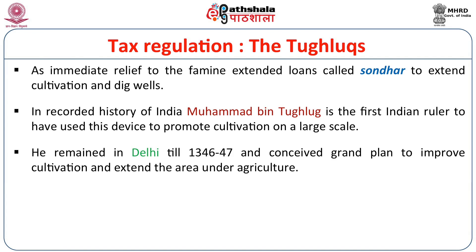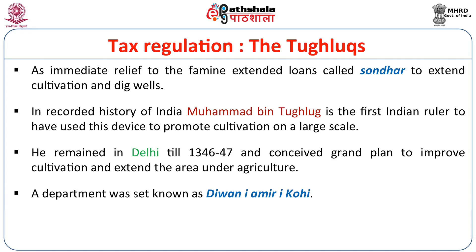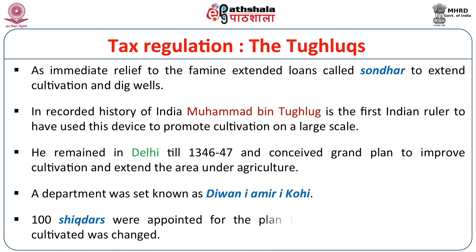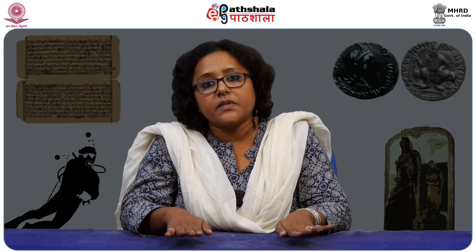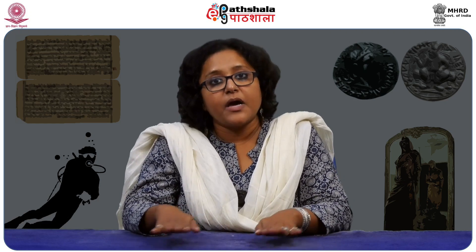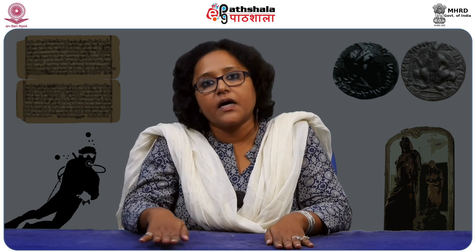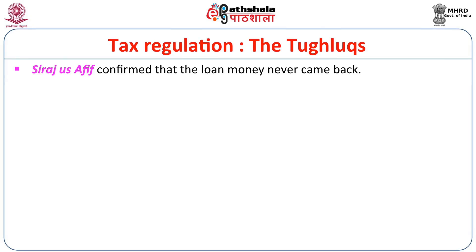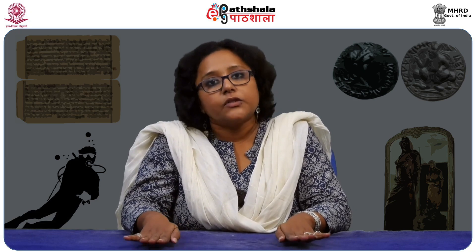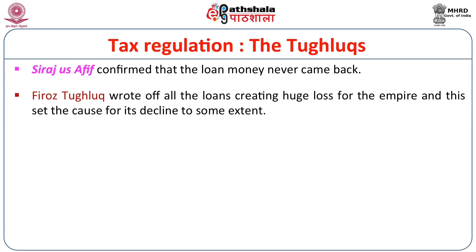He remained in Delhi until 1346-47 and conceived a great plan to improve cultivation and extend the area under agriculture. He formed a department of agriculture called Diwani Amiri Kohi, and almost 100 shikdars were appointed to work for agriculture. Crops were changed — land for barley would go to rice, sugarcane land to grape — in an attempt to achieve a higher degree of cultivation. However, Shams-i-Siraj Afif confirmed that the loan money never came back, making it an economic setback. Feroz Tughluq later wrote off all these loans, creating a huge loss for the empire and contributing to its decline.